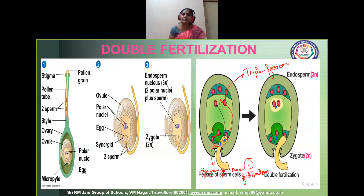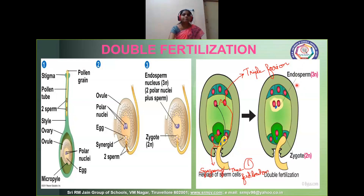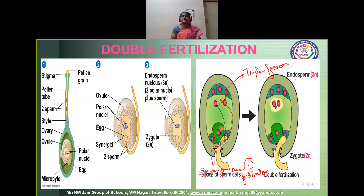Triple fusion and syngamy together — two times fertilization takes place — which we are calling double fertilization. What is the result of syngamy and triple fusion? Syngamy results in the formation of a structure called zygote. And triple fusion results in a structure called primary endosperm nucleus, which is going to develop into endosperm. We will see about this endosperm in the post-fertilization event. This is how double fertilization takes place: two male germ cells fuse with egg and polar nuclei.